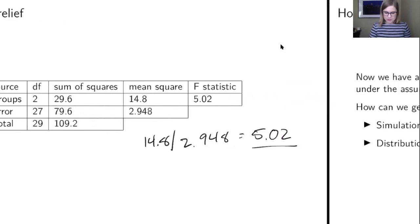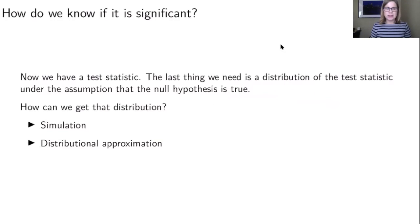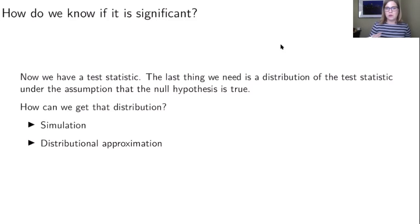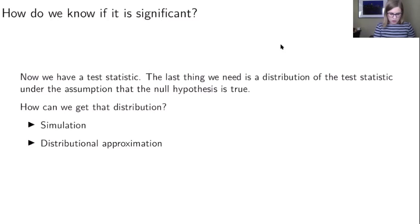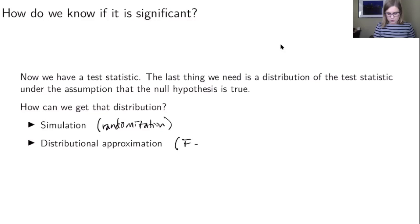In the last video we got up to the F statistic, and the next question is how do we know if it's significant. When we were using a normal distribution, if we got a z-score larger than 1.96 we would say that was significant. In this case we have an F value and we need to know if that's significant. We need a distribution of that test statistic under the assumption that the null hypothesis is true. We have two ways to get that distribution: one is by using simulation with randomization, and the other is a distributional approximation using the known F distribution.